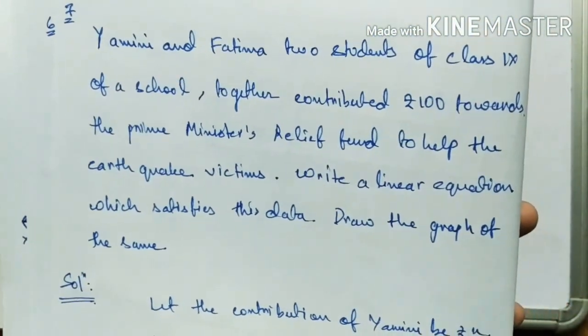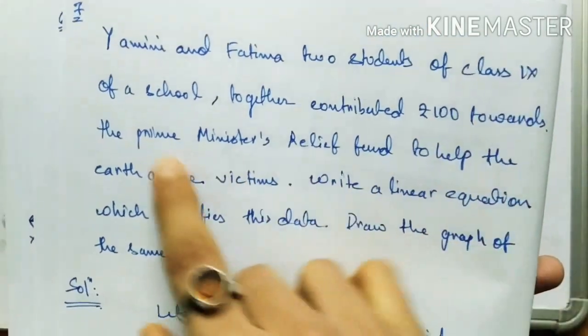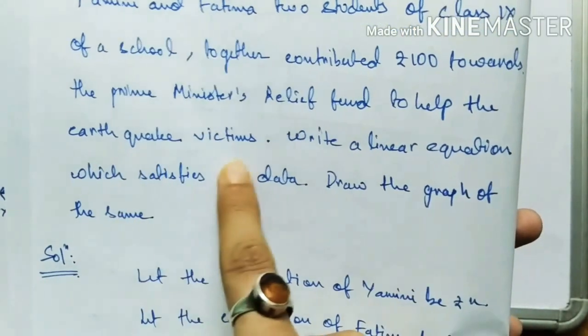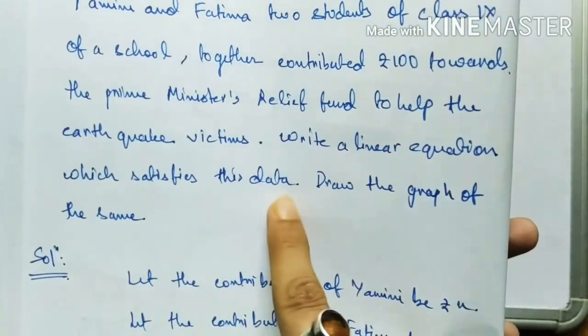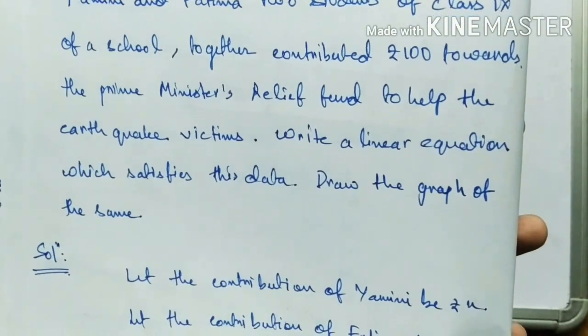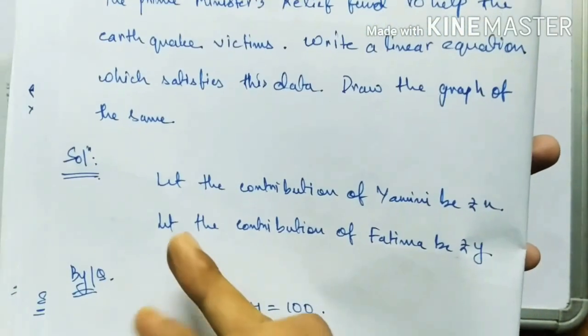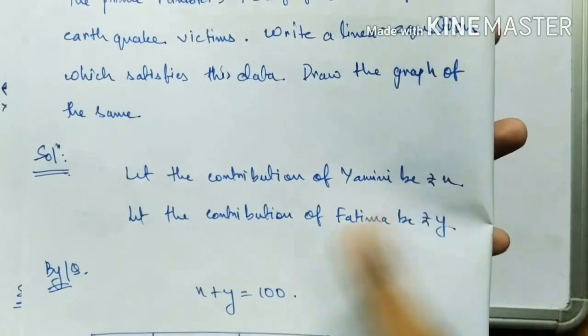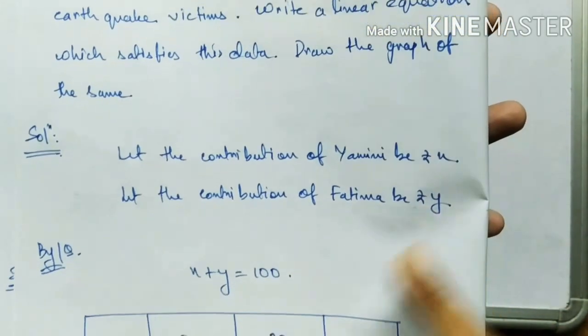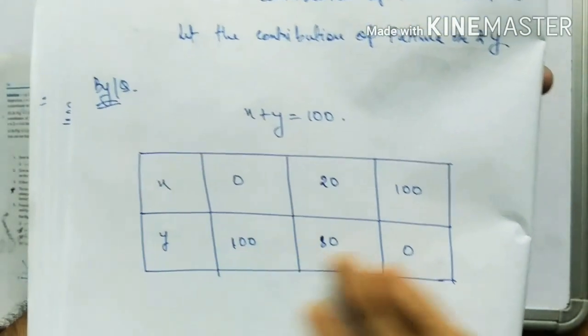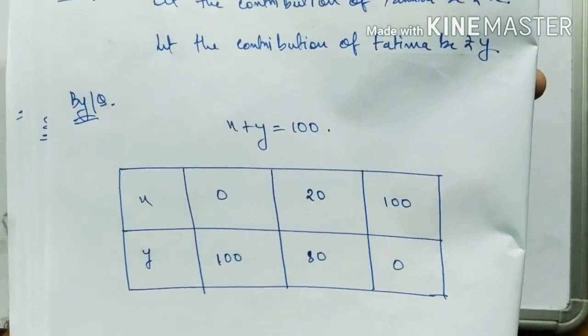Question Number 7: Yamini and Fatima, two students of Class 9, together contributed rupees 100 towards the Prime Minister's Relief Fund to help earthquake victims. Write a linear equation which satisfies this data and draw the graph. Let Yamini's contribution be rupees x and Fatima's be rupees y. By the question, x plus y equals 100.